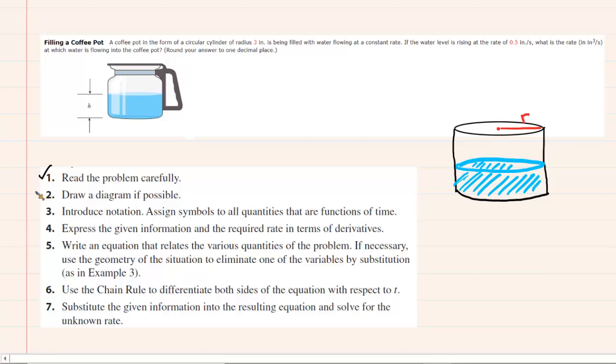And then what we want to do is draw a diagram if possible. The question notes here that this coffee pot can be imagined to be a perfectly circular cylinder. And so we've drawn a circular cylinder over here that would represent the diagram.